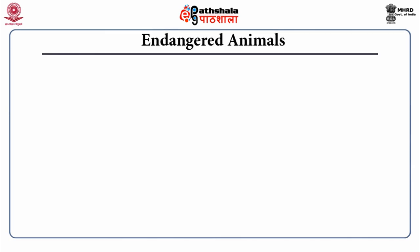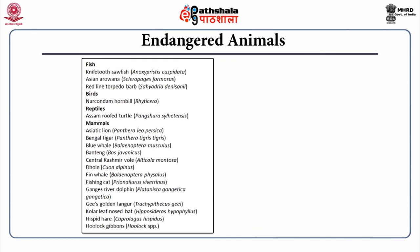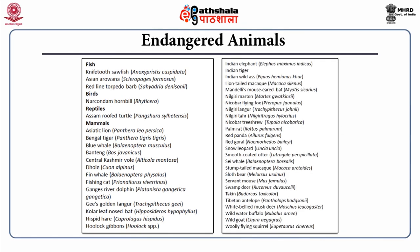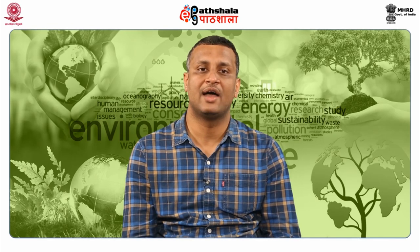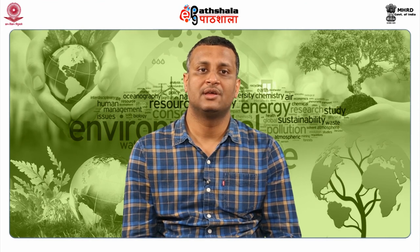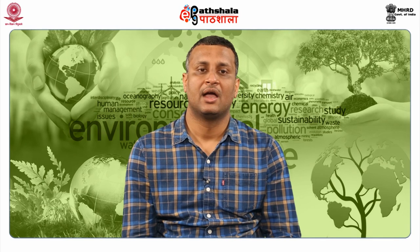Among endangered animals: fish including Asian arowana and red-line torpedo barb; birds including Narcondam hornbill; reptiles including Assam roof turtle. The most prominent endangered mammals include Asiatic lion, Bengal tiger, blue whale, central Kashmir vole, fin whale, Ganges river dolphin, hoolock gibbons, Indian elephant, Indian tiger, wild ass, lion-tailed macaque, Nilgiri marten, Nicobar flying fox, palm rat, red panda, snow leopard, swamp deer, Tibetan antelope, water buffalo and wild goat. Among vulnerable animals: Barasingha, clouded leopard, Indian rhinoceros, marbled cat, sperm whale and yak. Among endangered reptiles and amphibians: Olive Ridley sea turtle.